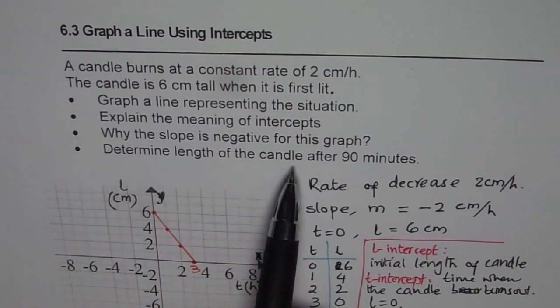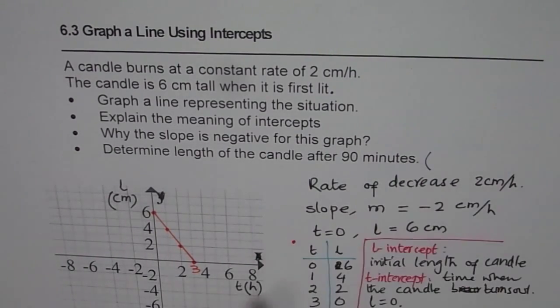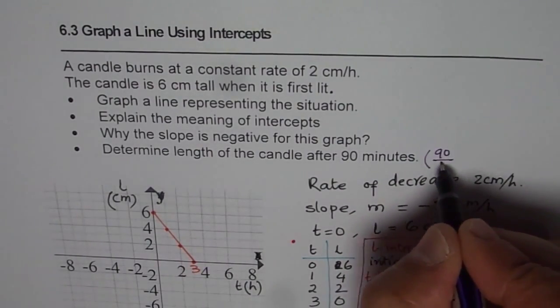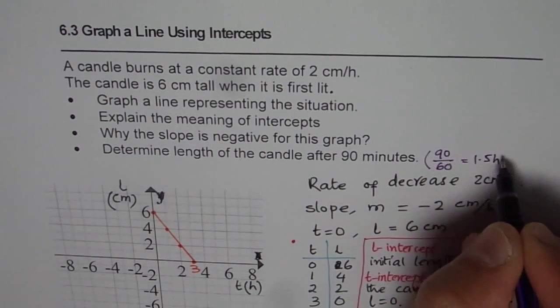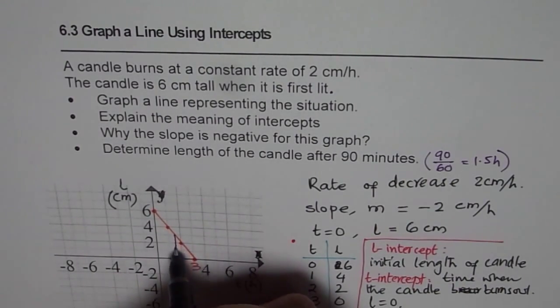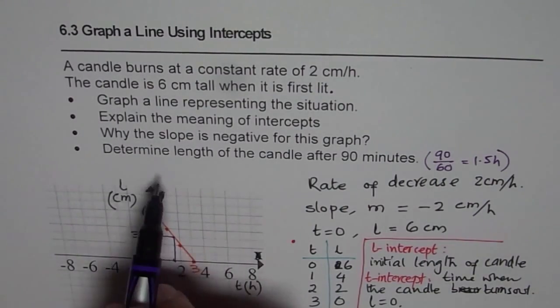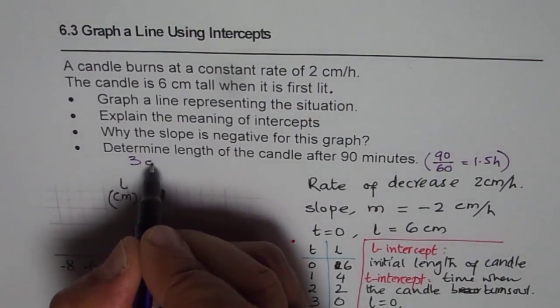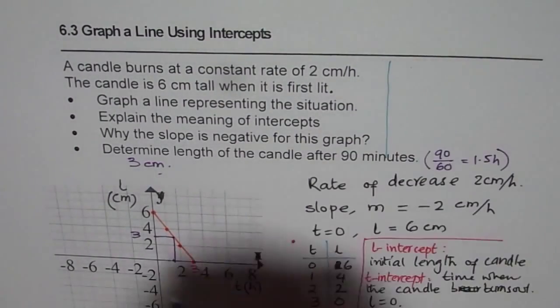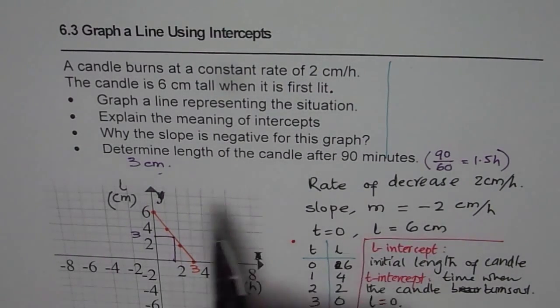Now, the question is, determine length of the candle after 90 minutes. Now, 90 minutes means how many hours? We should convert that to hours since time is in hours. 60 minutes is an hour. So we can do 90 divided by 60. That gives us 1.5 hours. So here is 1, 1 hour and 1.5. So as per the graph, we can go up like this and come to a value. It seems it will be 3. So we can say the length in this case is 3 centimeters. So this is one way of doing it.